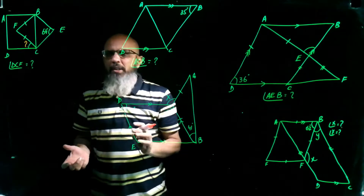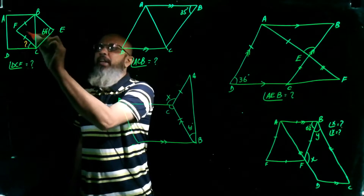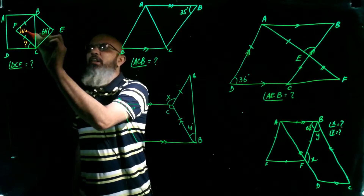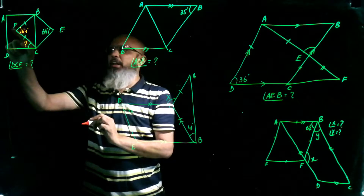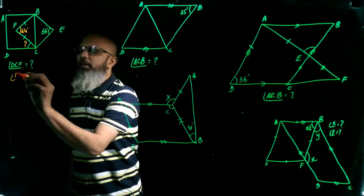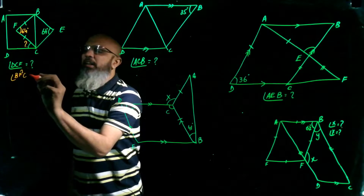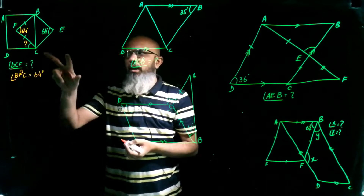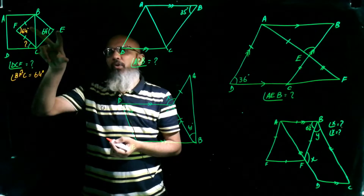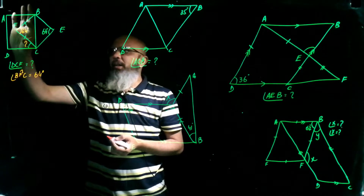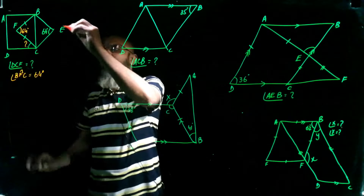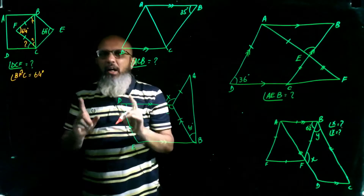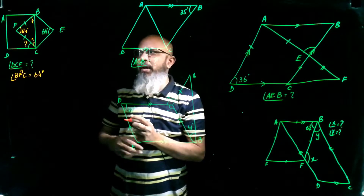What are the properties of a rhombus? Opposite angles are equal, so if one angle is 64 degrees, the opposite angle BFC is also 64 degrees. The two lines shown indicate that the two base angles of triangle BFC are equal but unknown.